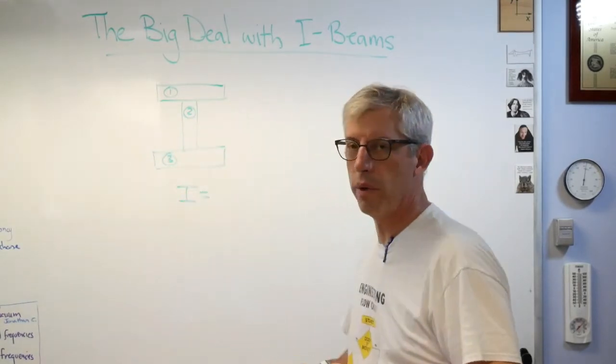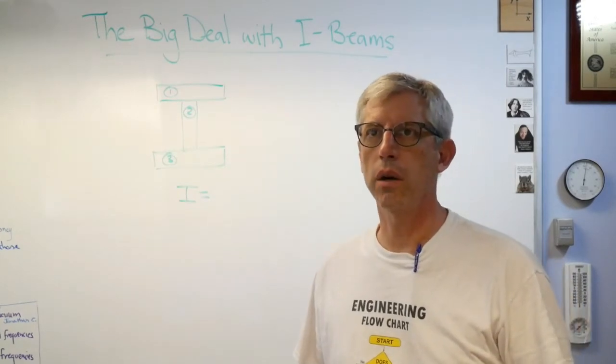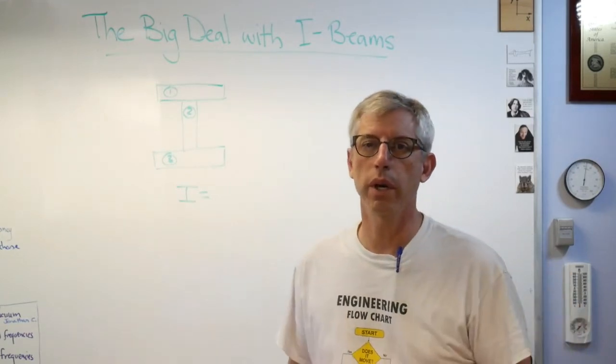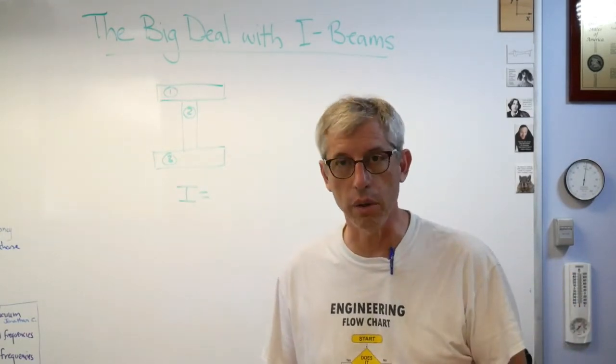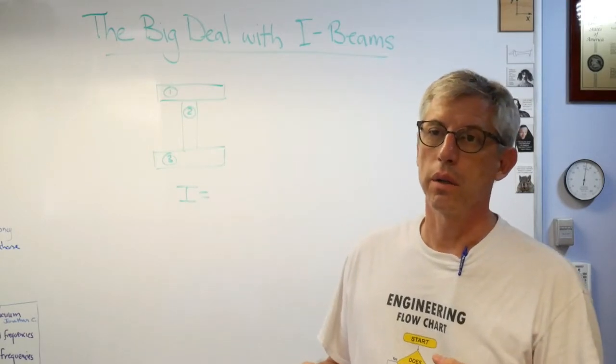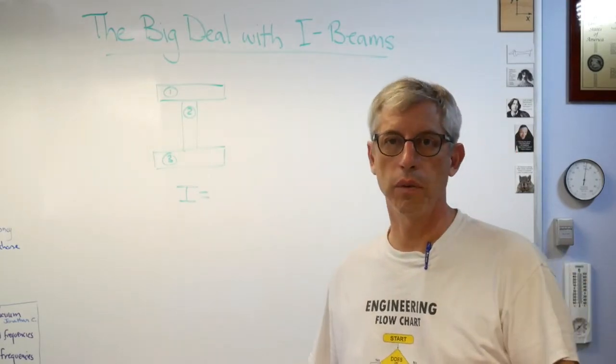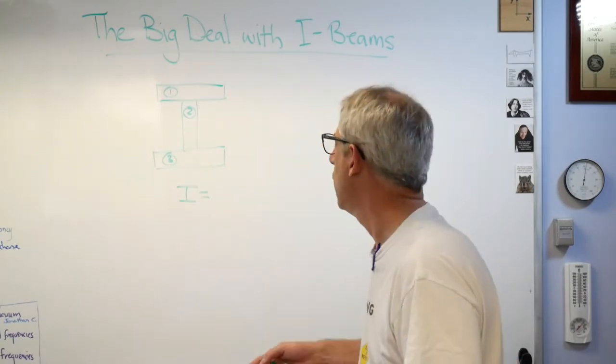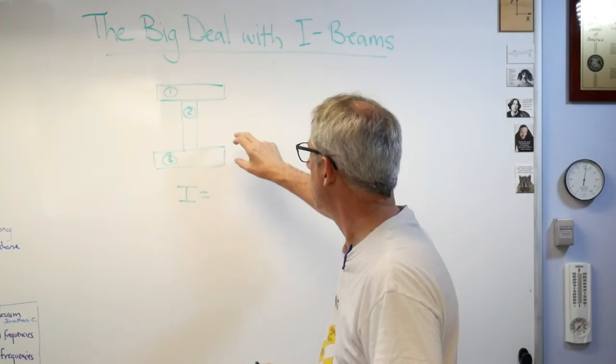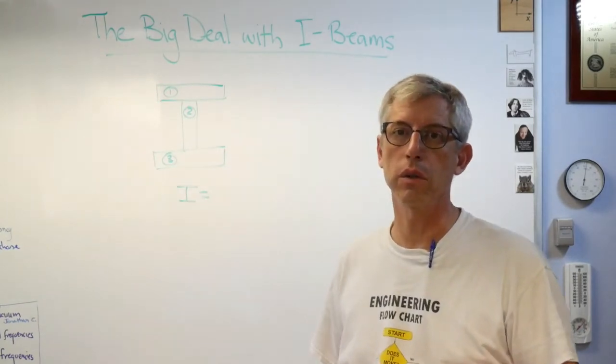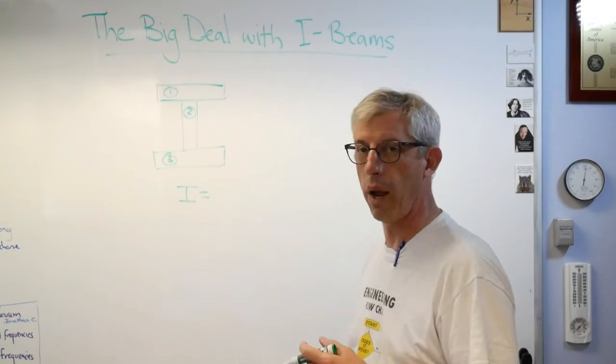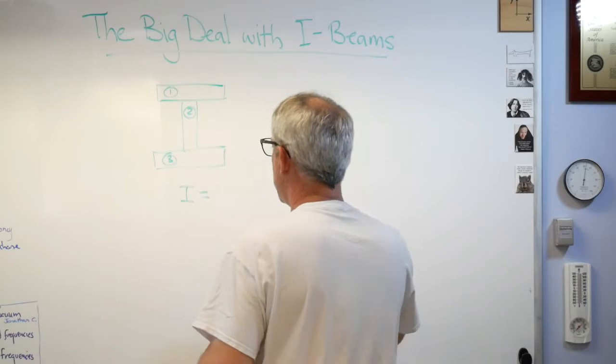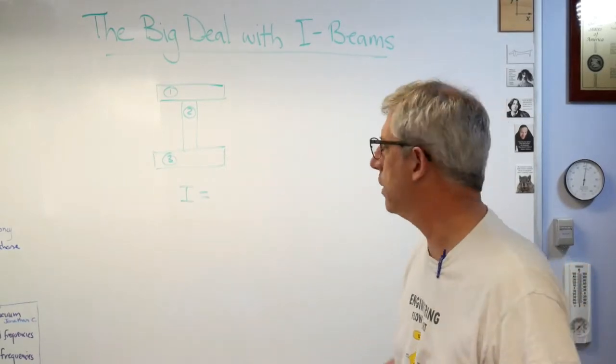The area moment of inertia is just a measure of stiffness due to the cross-sectional shape of a beam. Beams have two kinds of stiffness: their stiffness due to the materials they're made out of—so steel beams are stiffer than maybe aluminum beams, and those are stiffer than plastic beams if there is such a thing. That's the stiffness due to materials. The other kind of stiffness is stiffness due to shape, and that's called area moment of inertia.